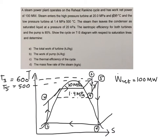The steam then leaves the condenser as a saturated liquid at a pressure of 20 kilopascals. When it says saturated liquid, state 1 must be on the saturated liquid curve, and the pressure given is 20 kilopascals.